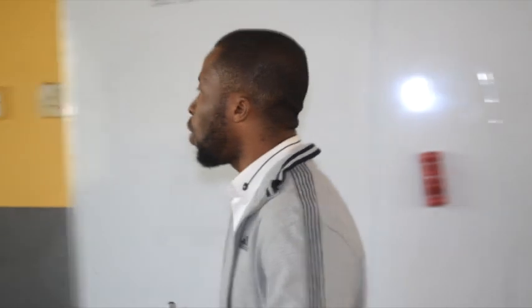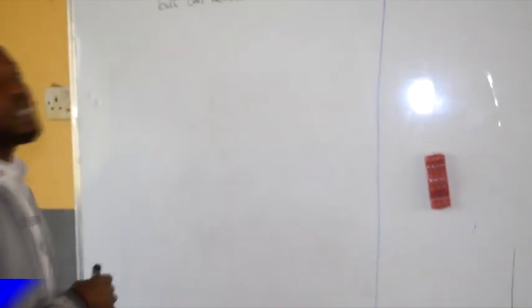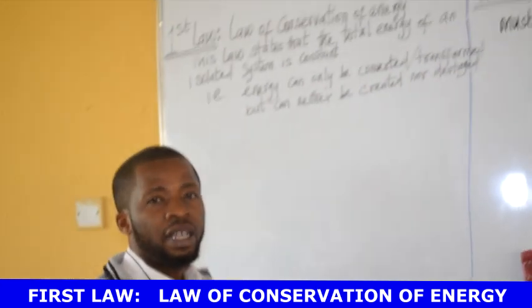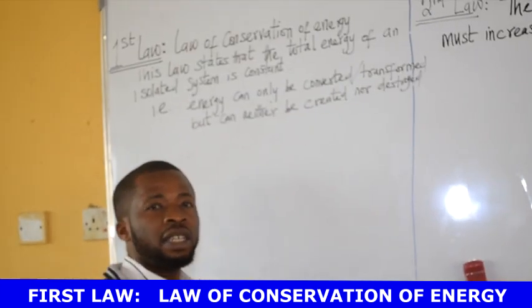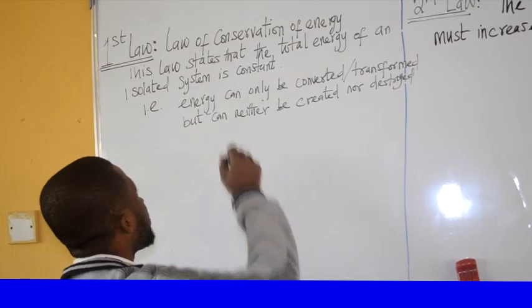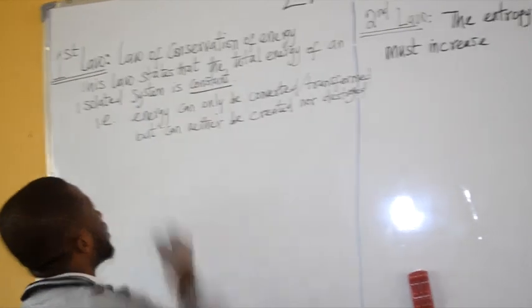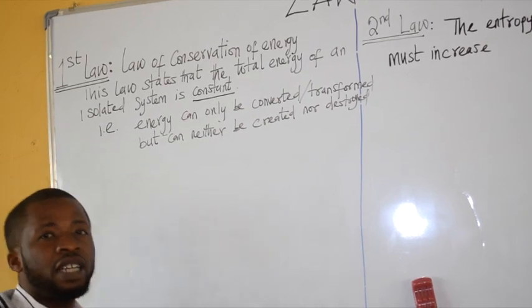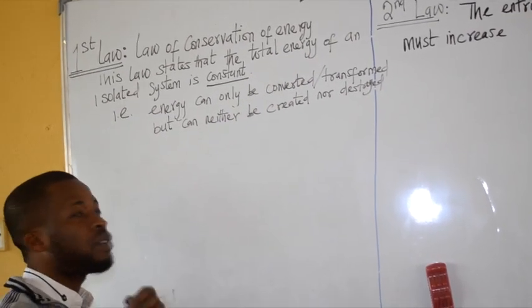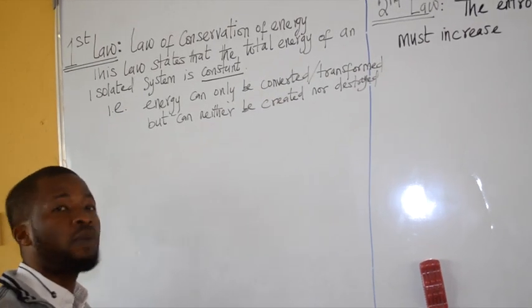Having learned that, the first law of thermodynamics is simply the law of conservation of energy. It states that the total energy of an isolated system is constant or conserved. That is, energy can neither be created nor destroyed, but can only be transformed or converted from one form to another.